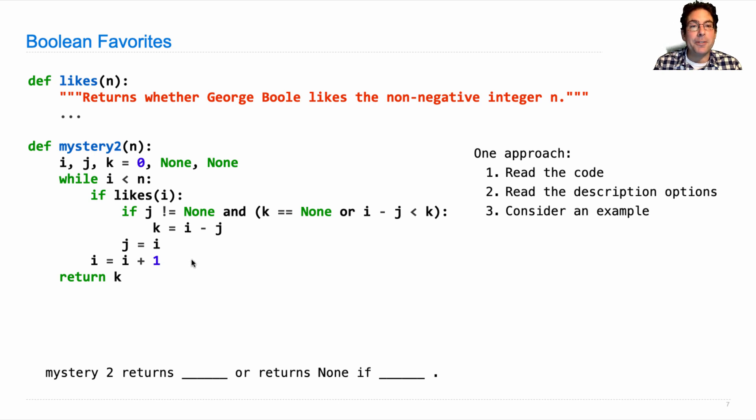So maybe reading the description would help. Here's the description: mystery two returns something or returns none if something else. Okay it only actually returns in one place. So k starts out as none but then gets reassigned. All right so this part has to be something about if k never gets assigned.